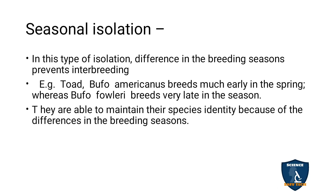Next is seasonal isolation. In this type of isolation, differences in the breeding season prevent interbreeding. Due to the difference in the breeding season — that is, the mating season — interbreeding is prevented. For example, the toad Buffo americanus breeds early in the spring season.